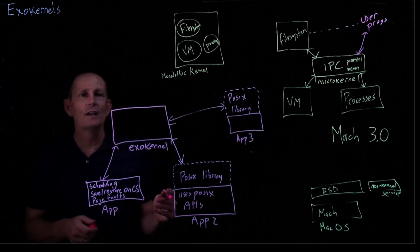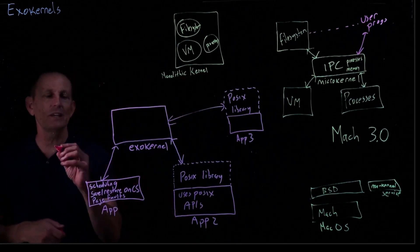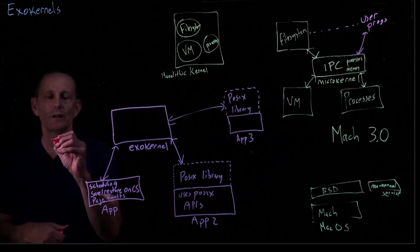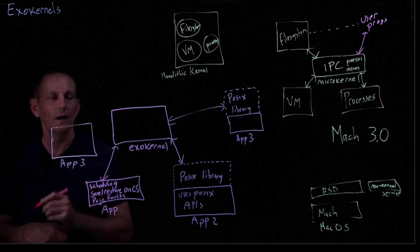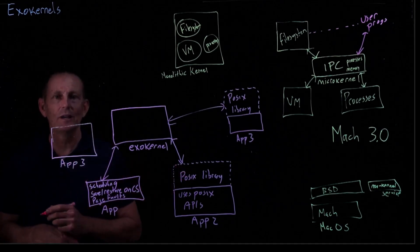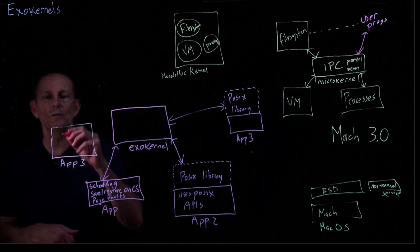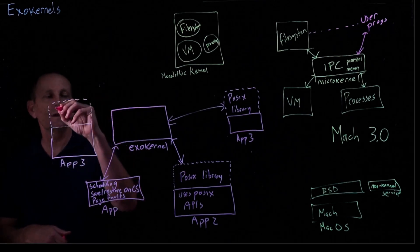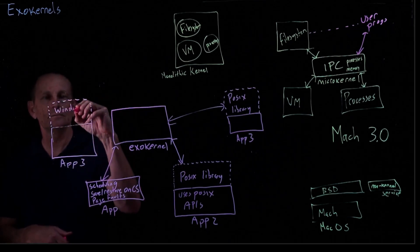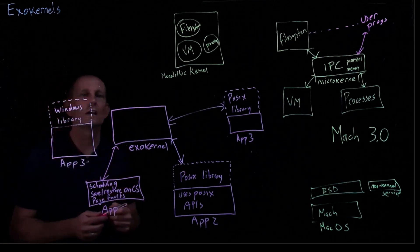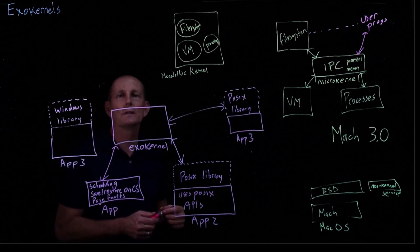One thing to keep in mind is that every application could have a different libOS if it wanted. So we could have an application that doesn't use a POSIX library — maybe it uses a Windows library, providing the functionality of all the Windows APIs.